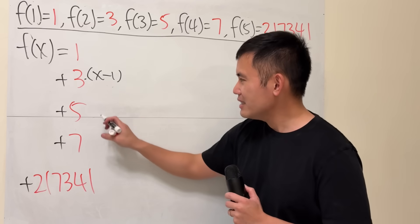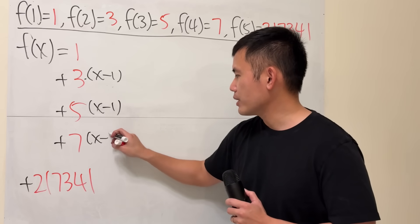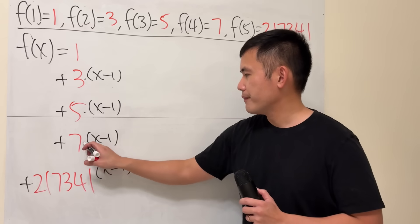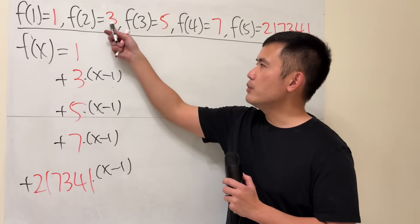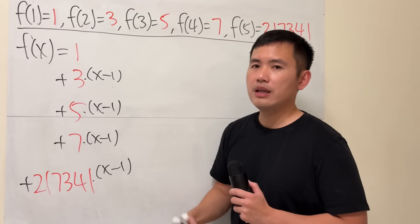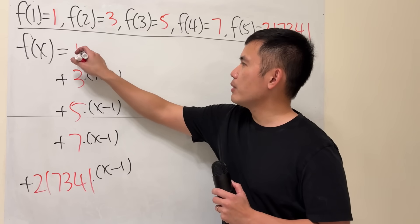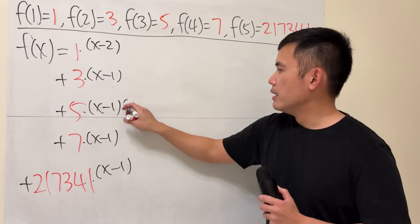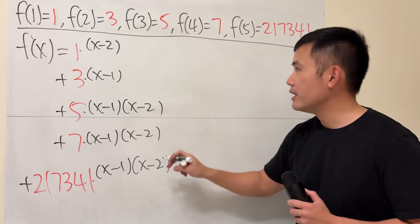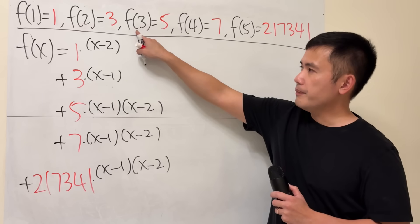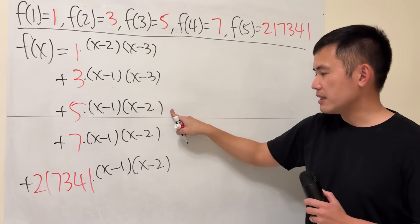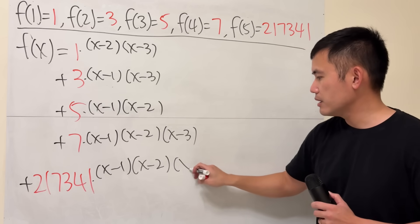Moving on to f(2) being 3. Same idea — I don't want the contributions from the other terms, so multiply by (x − 2) in each of those spots: (x − 2), (x − 2), (x − 2), and (x − 2). Continuing, for f(3) we need to multiply by (x − 3) everywhere except the third term — so (x − 3) here and here.